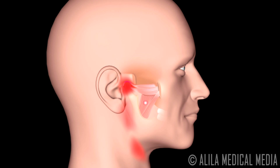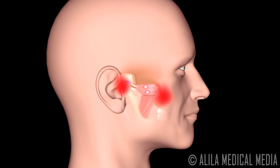Medial pterygoid trigger points also refer pain to the upper outside of the neck, and may manifest as sore throat and difficulty swallowing. Pain from lateral pterygoid trigger points can be felt in front of the ear and on the upper jaw. Treatments aim to address bruxism, to relieve muscle spasm, and release trigger points.